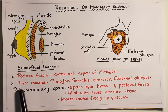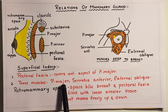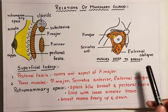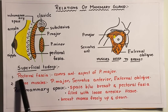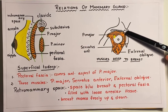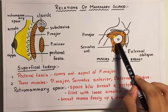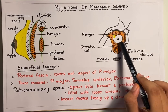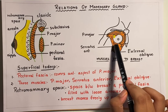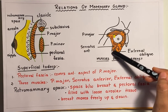Coming to the three muscles which are related to the breast, they are the pectoralis major muscle, the serratus anterior muscle, and the external oblique muscle. As you can see in this diagram, here is the pectoralis major muscle which is the largest muscle of the pectoral region. Then you have your serratus anterior which clothes the sides of the chest wall and has a serrated appearance as is visible here. Then you have your external oblique muscle.